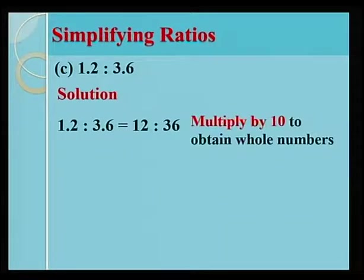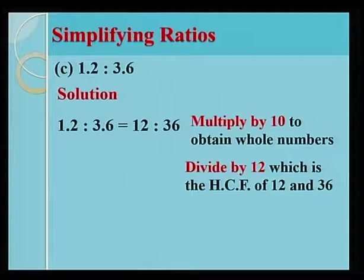1.2 is to 3.6 equals 12 is to 36. Here, we have multiplied 1.2 and 3.6 by 10 to obtain whole numbers. We then divide each number by 12, which is the HCF of 12 and 36. To obtain 1 is to 3.